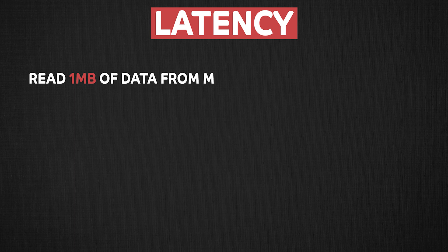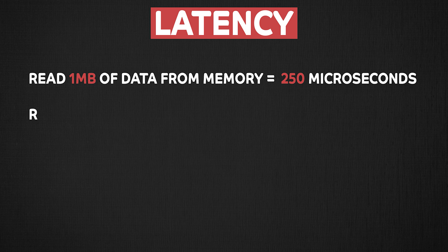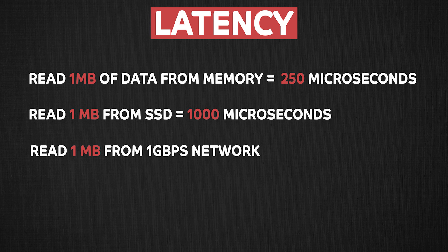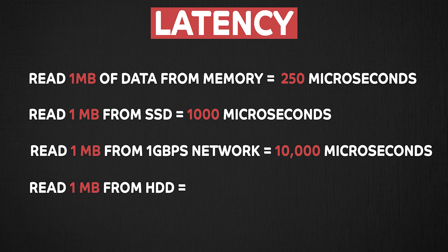Reading 1MB of data from memory takes about 250 microseconds, which is really fast. 1MB from an SSD drive will take you about 1,000 microseconds. 1MB over a 1 gigabyte per second network can take you about 1,000 microseconds. And 1MB from a hard disk drive will take you about 20,000 microseconds.